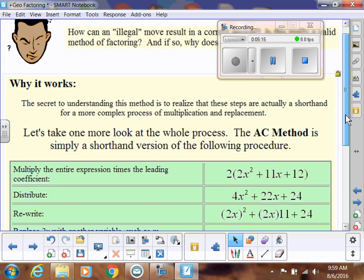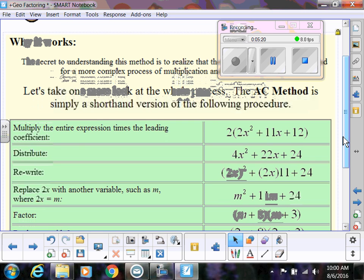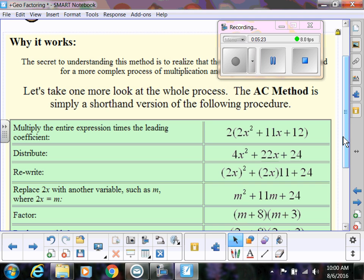These steps that we just did are actually shorthand for a more complicated process. Here's the actual mathematics behind it. If we take what we originally started with, 2x² + 11x + 12, we're multiplying the entire expression by 2, the leading coefficient. So we distribute: 4x² + 22x + 24.